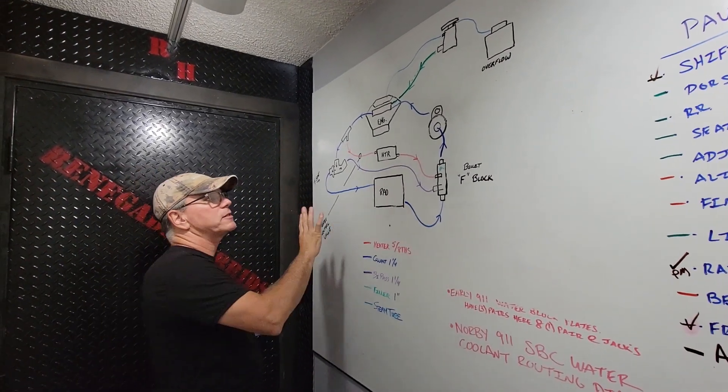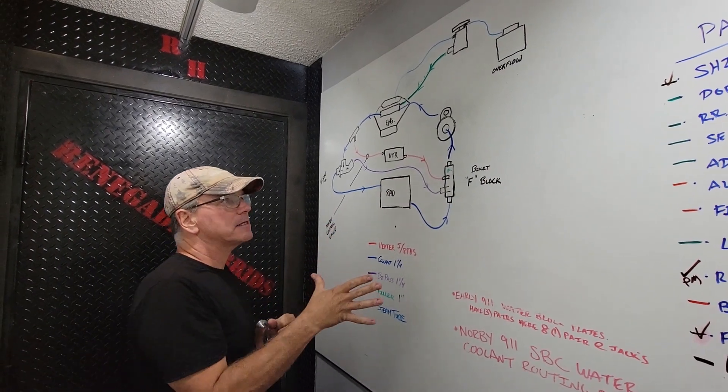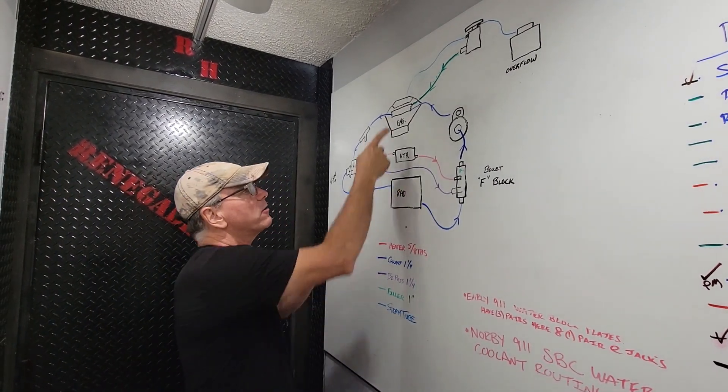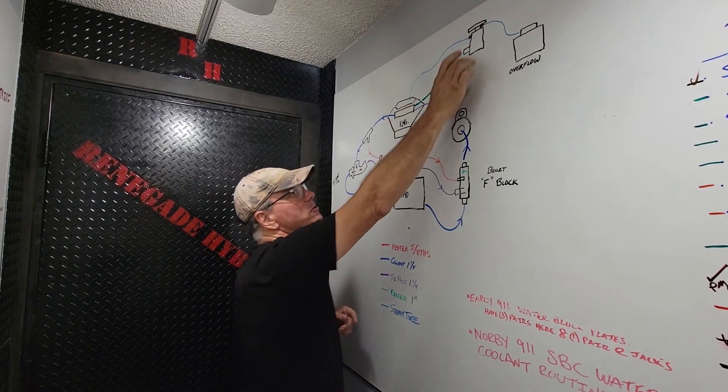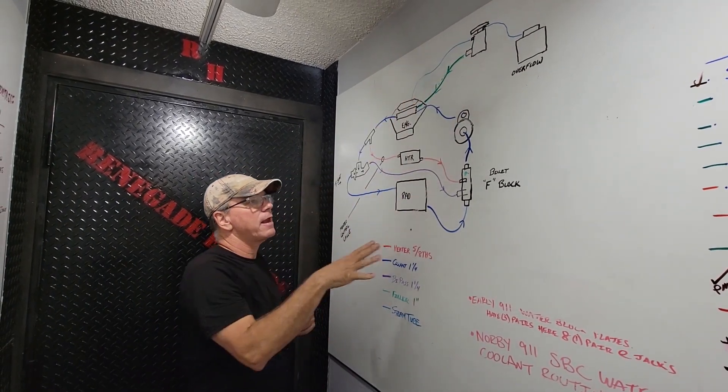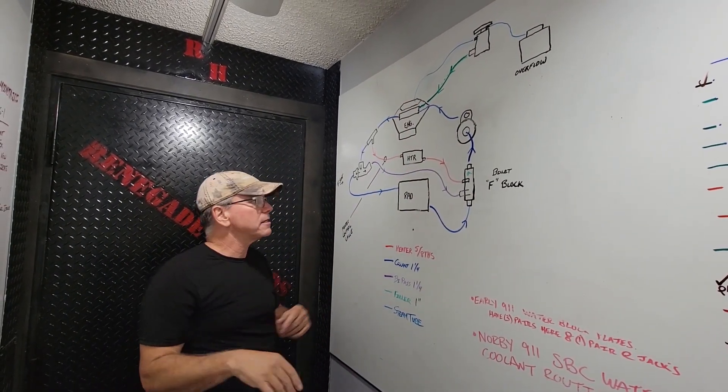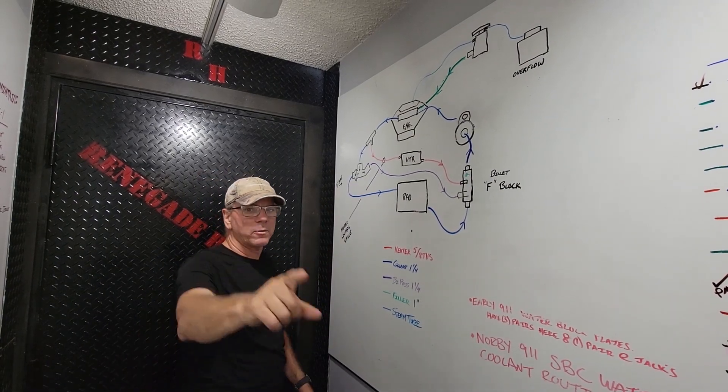This right here is our new cooling system for the 914 LS, a little bit different routing. Everything is the same as far as the radiator, the front manifold, our filler neck, and things like that. But we're going to change some of the sizes and add a little bit different thermostat. So here we go.